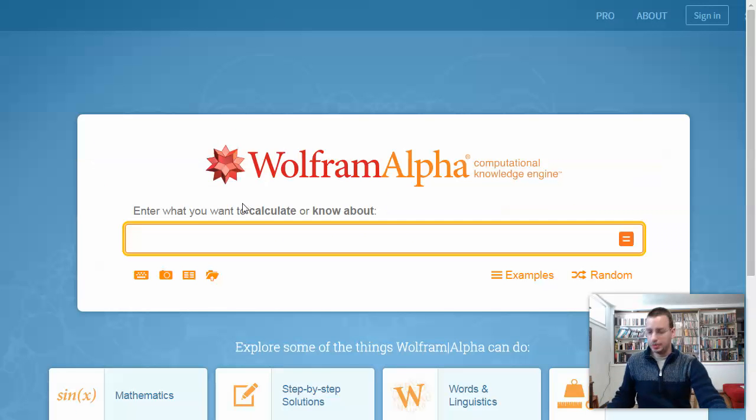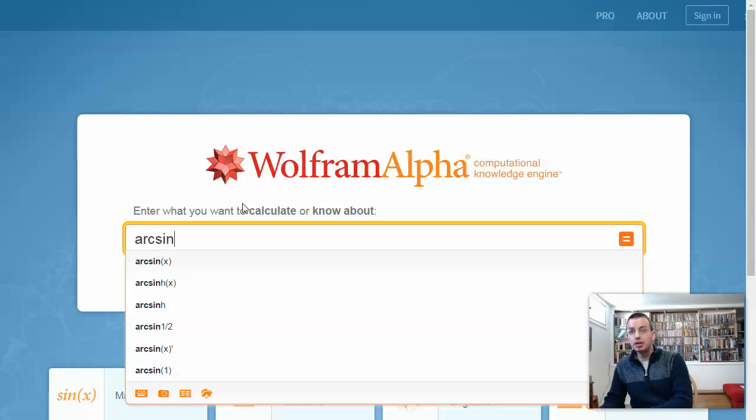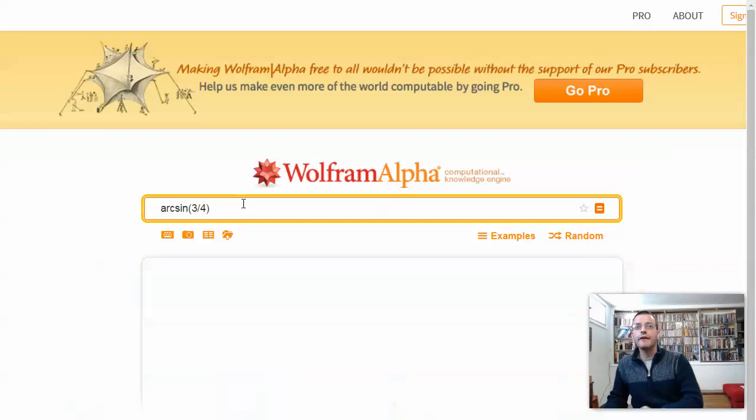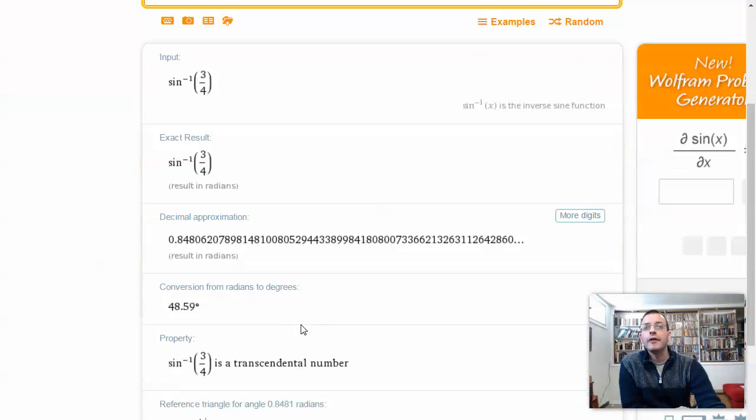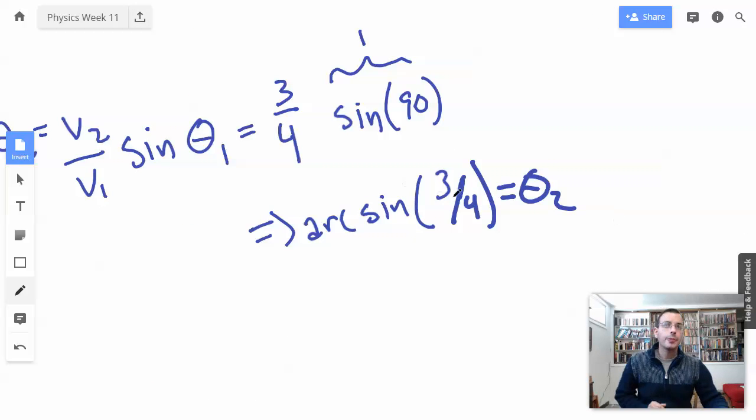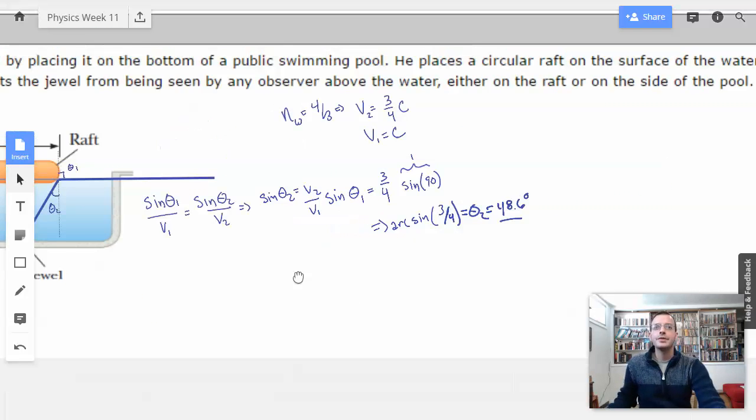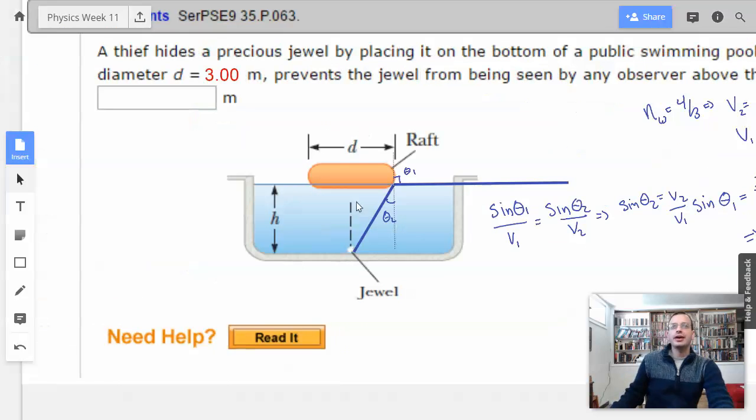All right, so now, let's probably actually figure out what that is. Arc sine of 3 divided by 4. We want the one that's in degrees. 48.6, I'm going to say 48.6. Equals 48.6 degrees. Got it. Okay. So now we know that angle that we have going down, and we need what, depth?